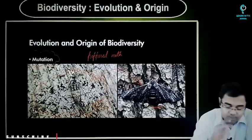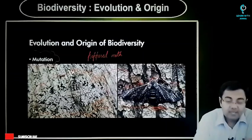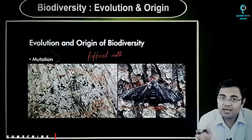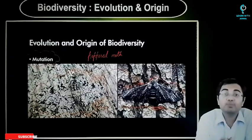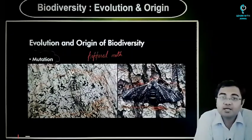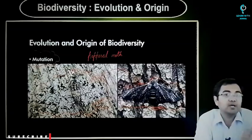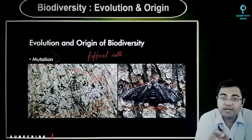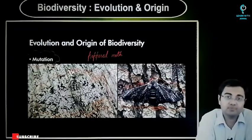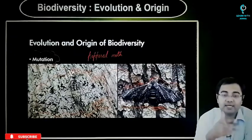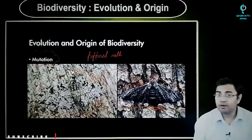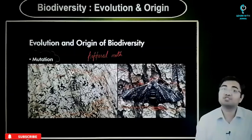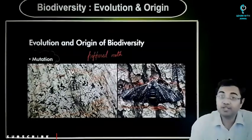But there was a mutation — the black-colored peppered moth. Now that the bark of the trees was dark-colored, this black peppered moth was able to survive because of this particular mutation. When you talk about the evolution of biodiversity, mutation becomes a very important factor in helping a population of organisms survive. The light-colored peppered moth would not be able to survive, but the black variant would survive for many generations to come. This is the manner in which mutation works.